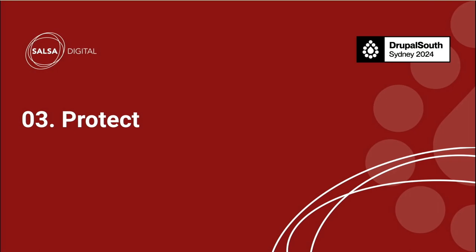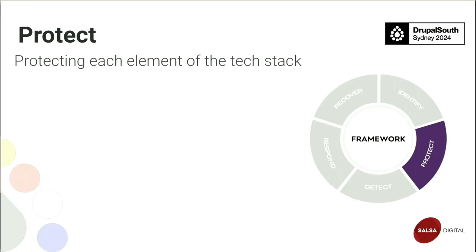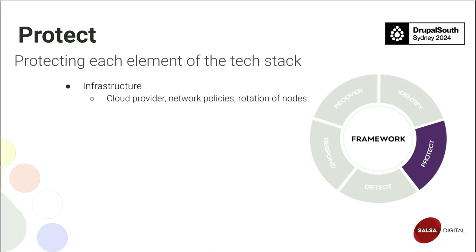For the protect phase, starting with infrastructure: since we're most likely in the cloud, we want to leverage cloud provider concepts — things like network policies and security groups, cloud provider managed OS images configured with best practices, and regular rotation of worker nodes to keep the OS up to date. This can be done manually or via a tool like Karpenter, where you can schedule worker nodes to have a finite lifespan, then be removed and replaced with a more up-to-date version.